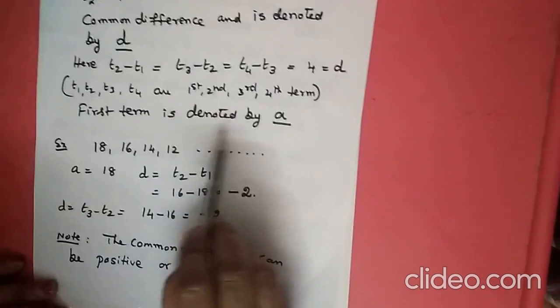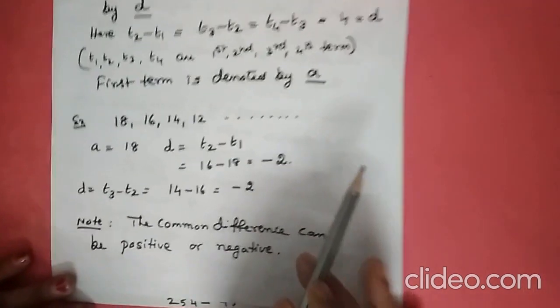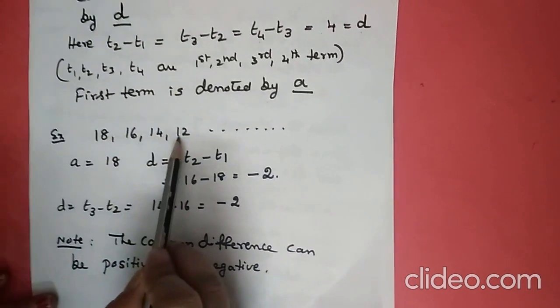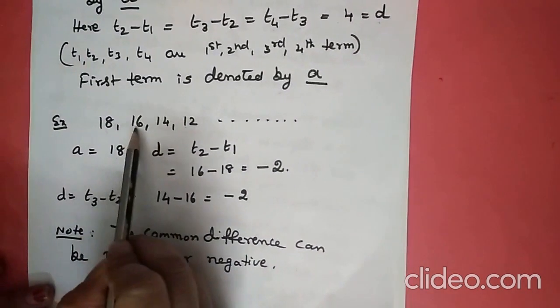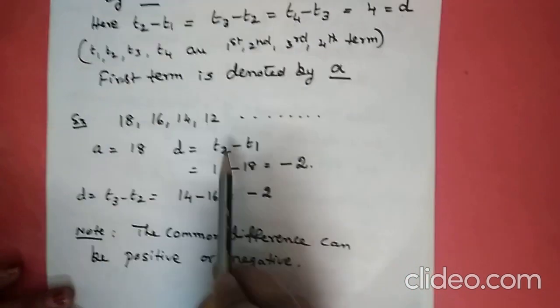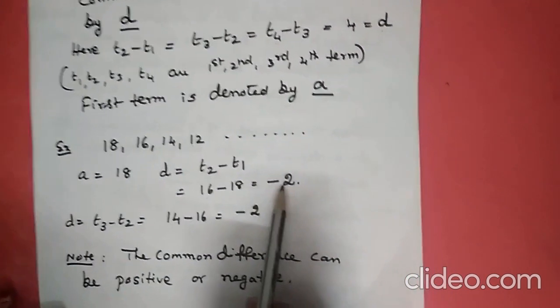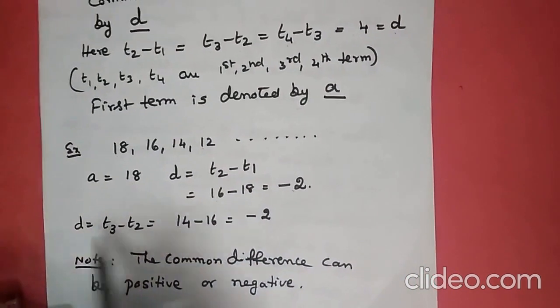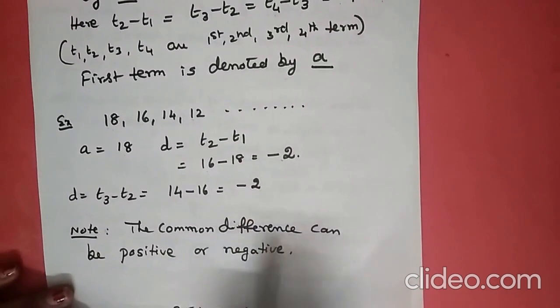Now take the example: 18, 16, 14, 11. Here the first term A is 18. The common difference is T2 minus T1: 16 minus 18 equals minus 2. T3 minus T2 is also minus 2. The common difference can be positive or negative — it is not necessary that it should always be positive.